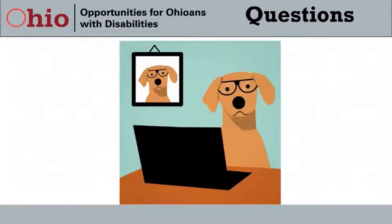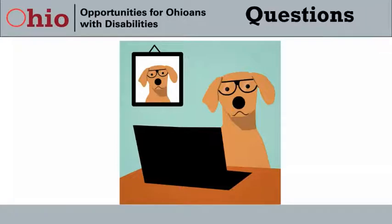Question: What if an employee was already receiving a reasonable accommodation before the pandemic and now requests another or a different one? This can occur due to changes in the workplace or because someone experienced an onset or change in their disability during the pandemic. This is a reminder that an employee can request a reasonable accommodation at any point during employment, and changes during the pandemic may explain why new requests are coming in now.